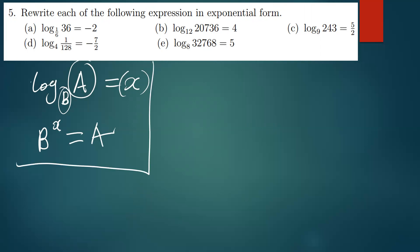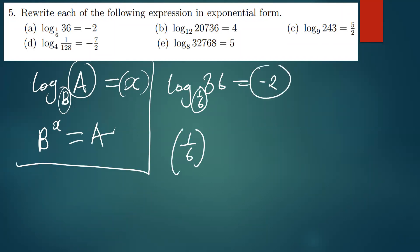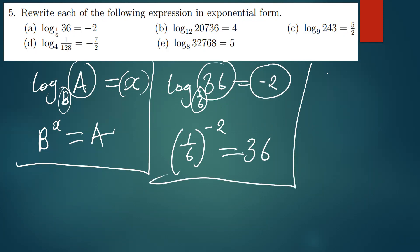We follow this format to convert. We have the log of 36 being equal to negative 2, with base 1 over 6. Remember, the base will still remain the base. The power is going to be negative 2, and this will be equal to 36. We've converted to exponential.